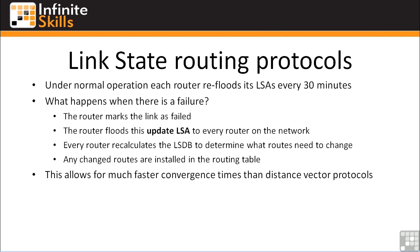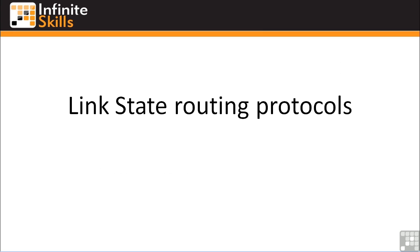This process allows for much faster convergence times than distance vector protocols, simply because you don't have to wait 30 seconds for an update, or wait for RIP routes to populate throughout all the routers on the network. Router A receives an LSA that says this link is down, immediately floods it to all of its neighbors, and so on. So your convergence time is a lot less with link state routing protocols than with distance vector. And that concludes our overview of link state routing protocols.